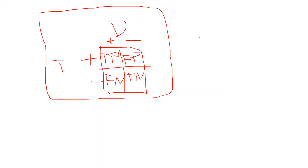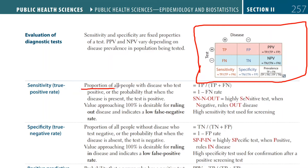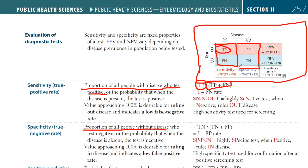If we think about the definition and try to relate it to the formula, it becomes very simple. The definition of sensitivity is the proportion of all people with the disease who test positive. So the formula is the number who test positive over all of those who have the disease. For specificity, it's the proportion of all people without the disease who test negative. The formula is those who tested negative over all of the ones without the disease. That's how we link this formula right to the definition.